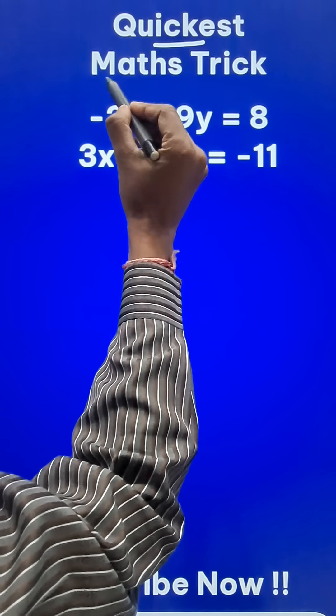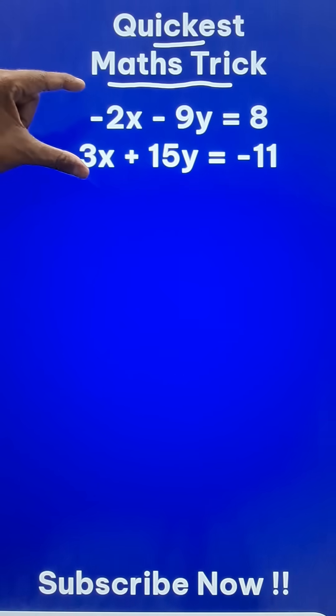Here is the quickest mathematics trick to solve the system of linear equations. This is an indirect application of the Cramer's rule or the cross multiplication method.